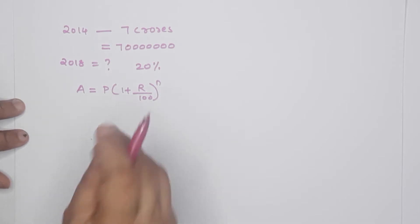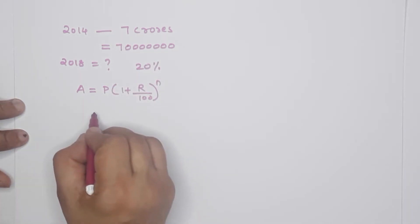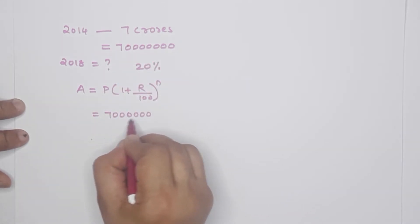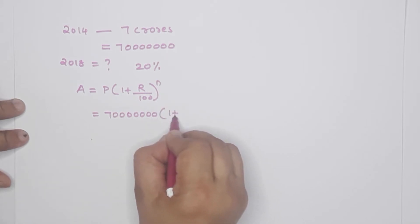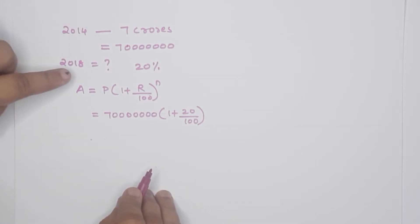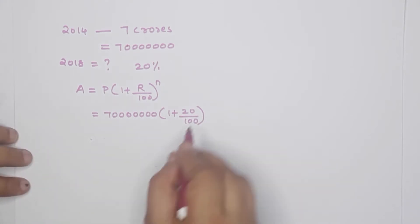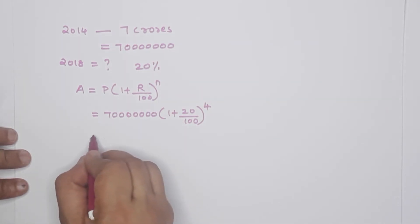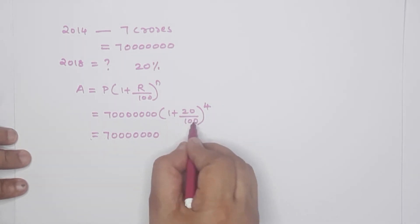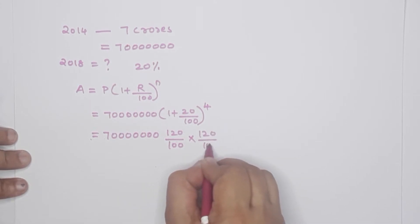A is equal to P into 1 plus R by 100, whole raise to N. P is the principal — the starting value. In 2014, P is 7 crores, that is 7 followed by 7 zeros. Then 1 plus 20 by 100, whole raise to N. From 2014 to 2018 that is 15, 16, 17, 18 — 4 years. So N is 4. This equals 120 by 100, raised to 4 times.